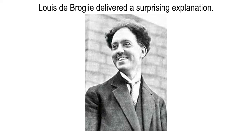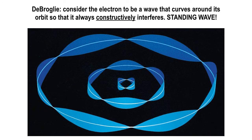What de Broglie figured out was that if you treat an electron not as a particle but as a wave, then the entire quantum structure of the atom becomes quantized. He said: if you only have certain wavelengths that will form standing waves — like in that demonstration with Darian and Caroline — only certain frequencies worked. On a coil spring or a guitar, if the size is set, only certain frequencies and wavelengths are permitted.